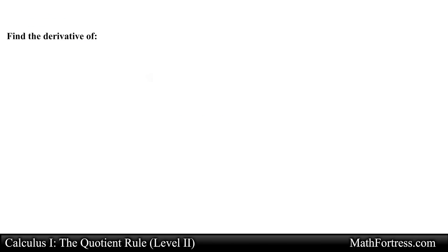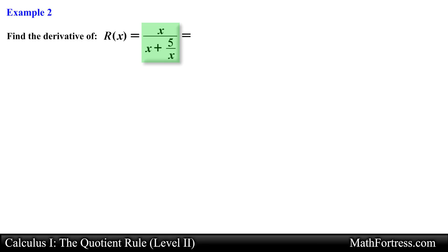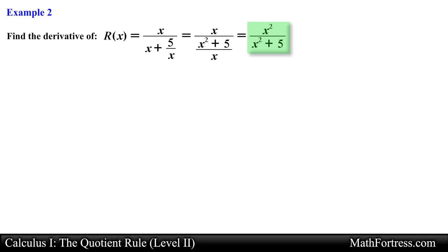Let's try a slightly more challenging example. Find the derivative of r equals x over the quantity x plus 5 over x. This function looks pretty complex — it seems like we can apply the quotient rule. But before we use the quotient rule, let's rewrite this function into a quotient-rule-friendly form. We have a complex fraction that can be simplified by rewriting the denominator as a single fraction, and then simplifying the complex fraction as one single quotient. Now we are ready to apply the quotient rule.